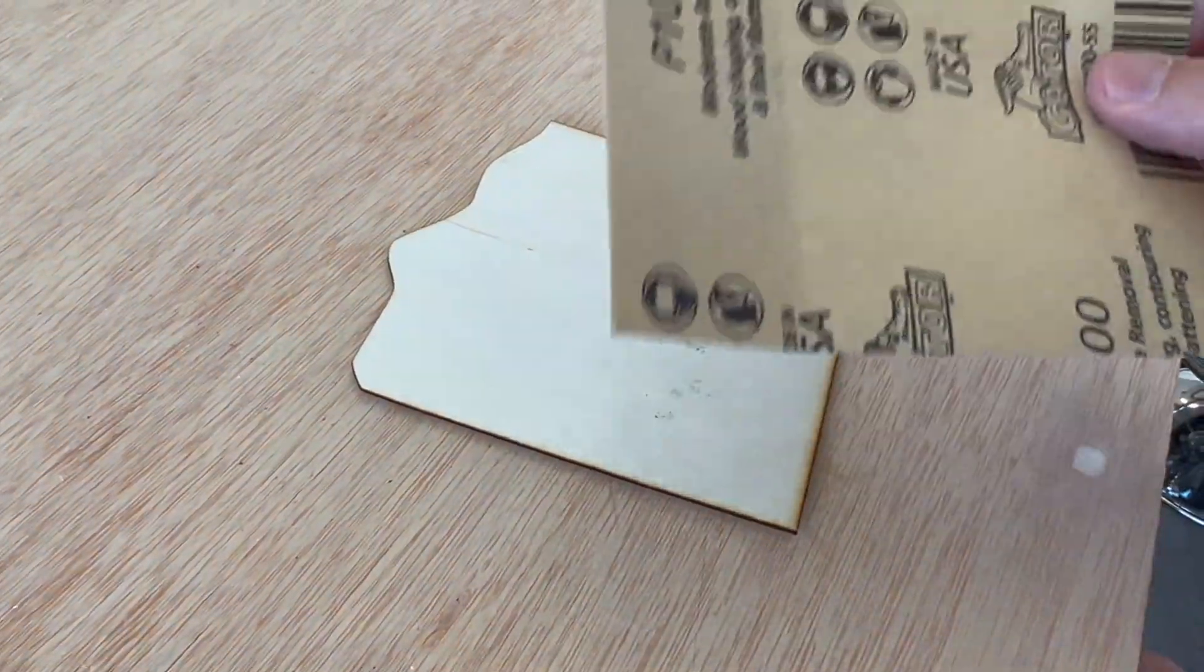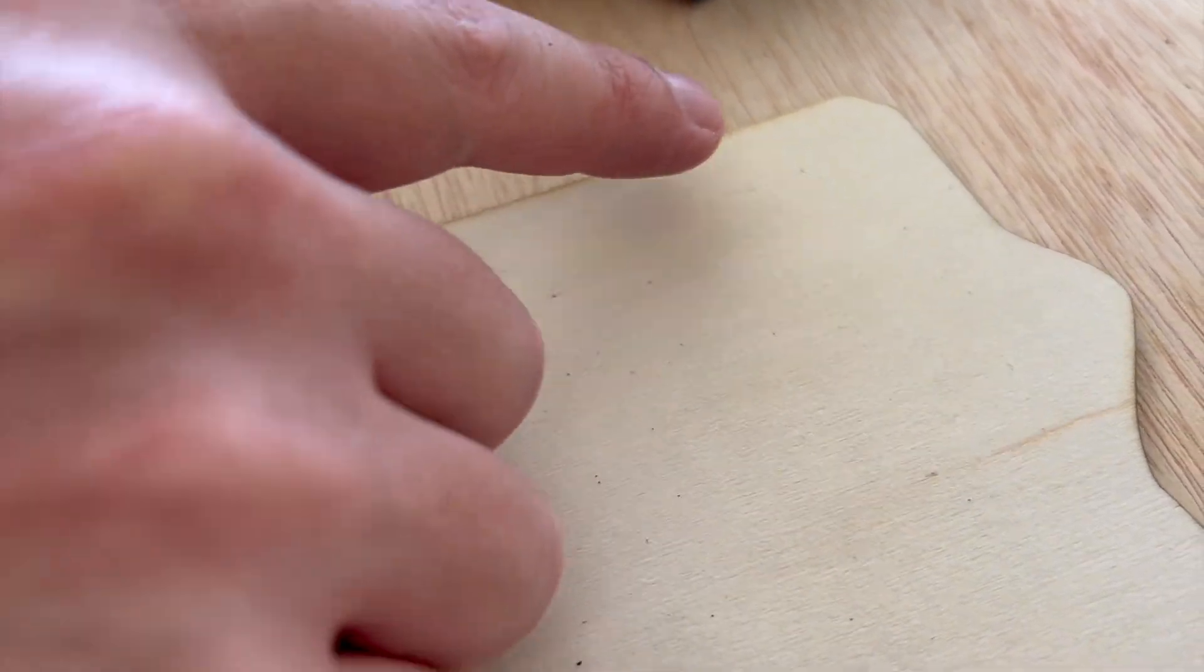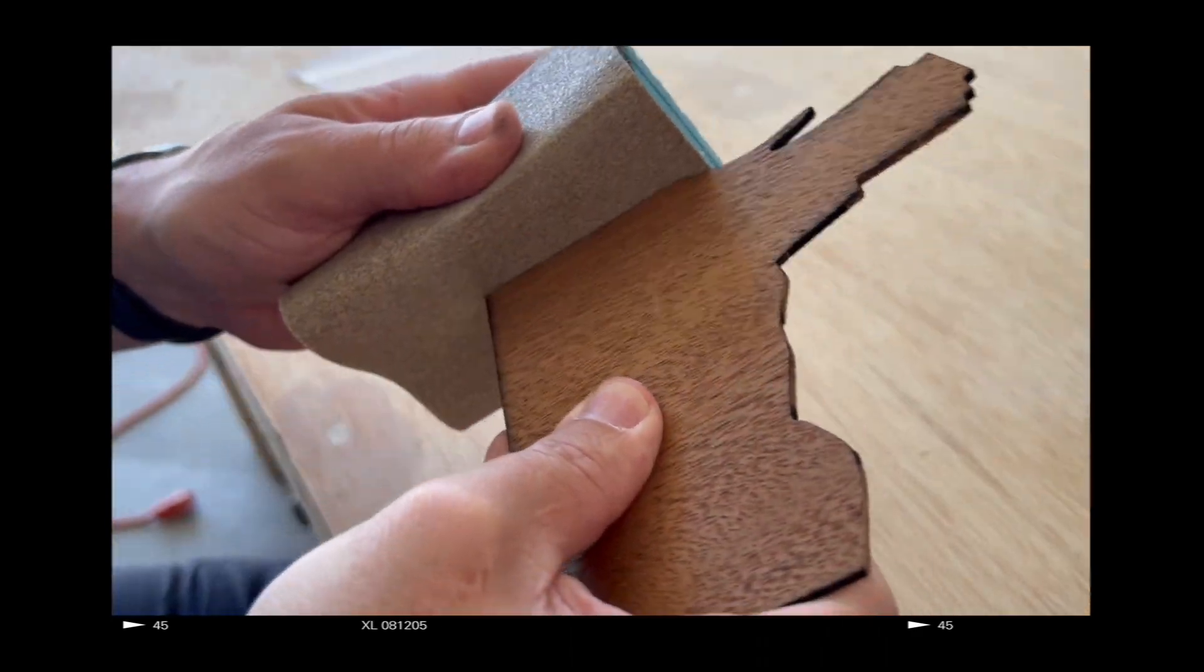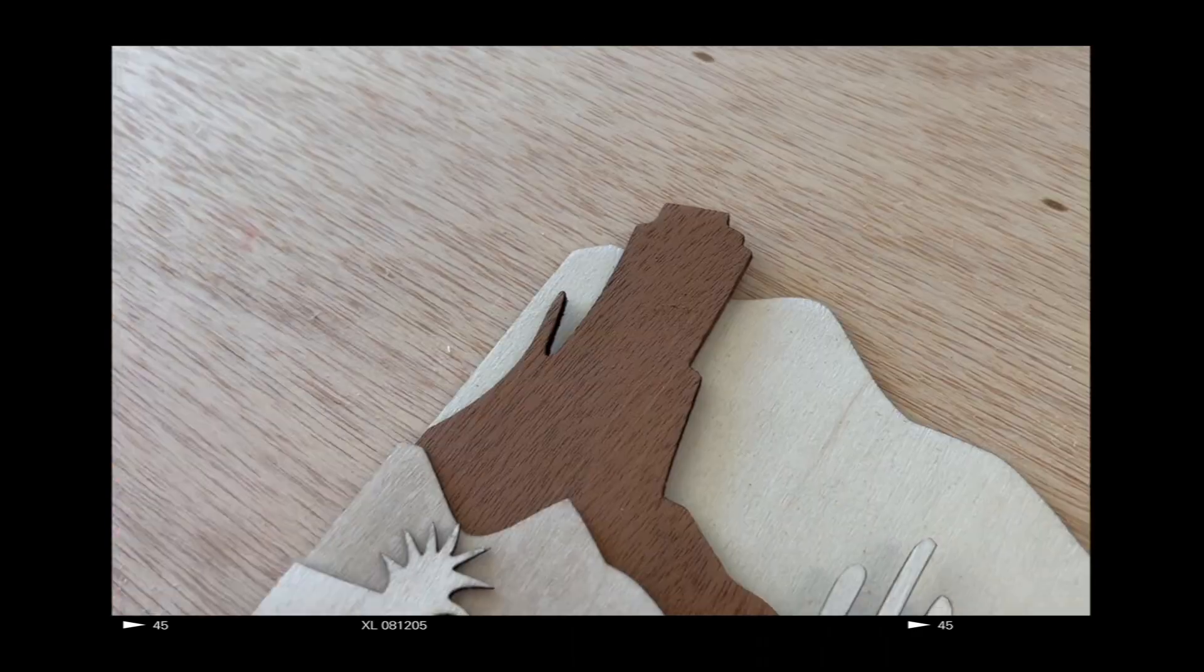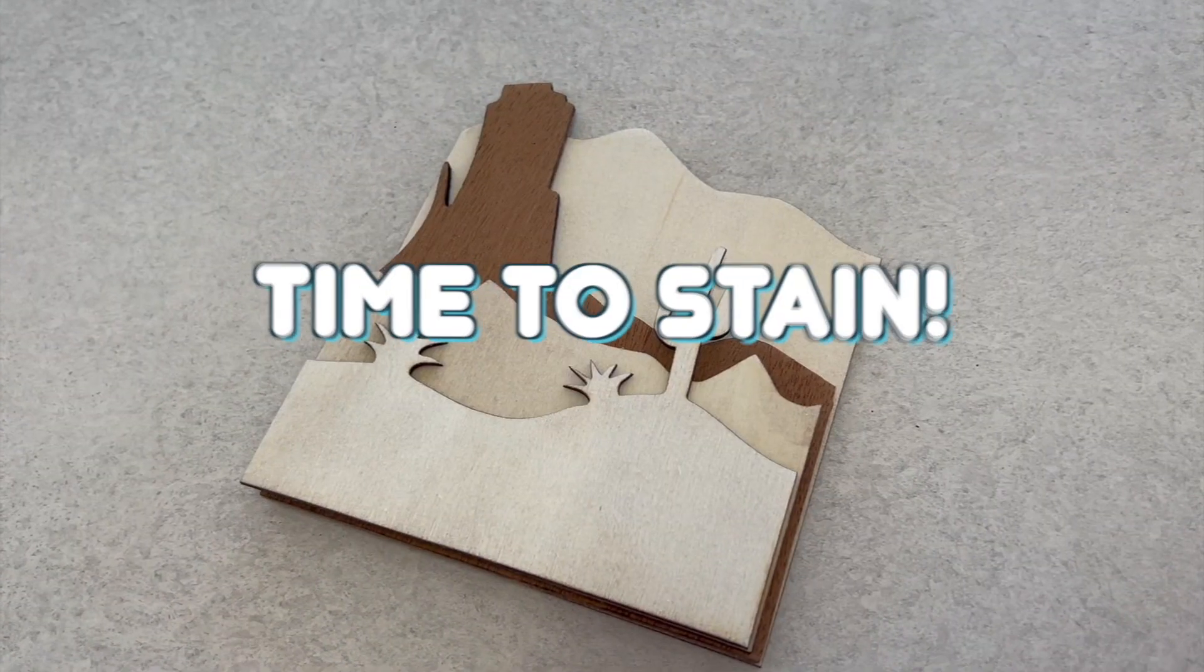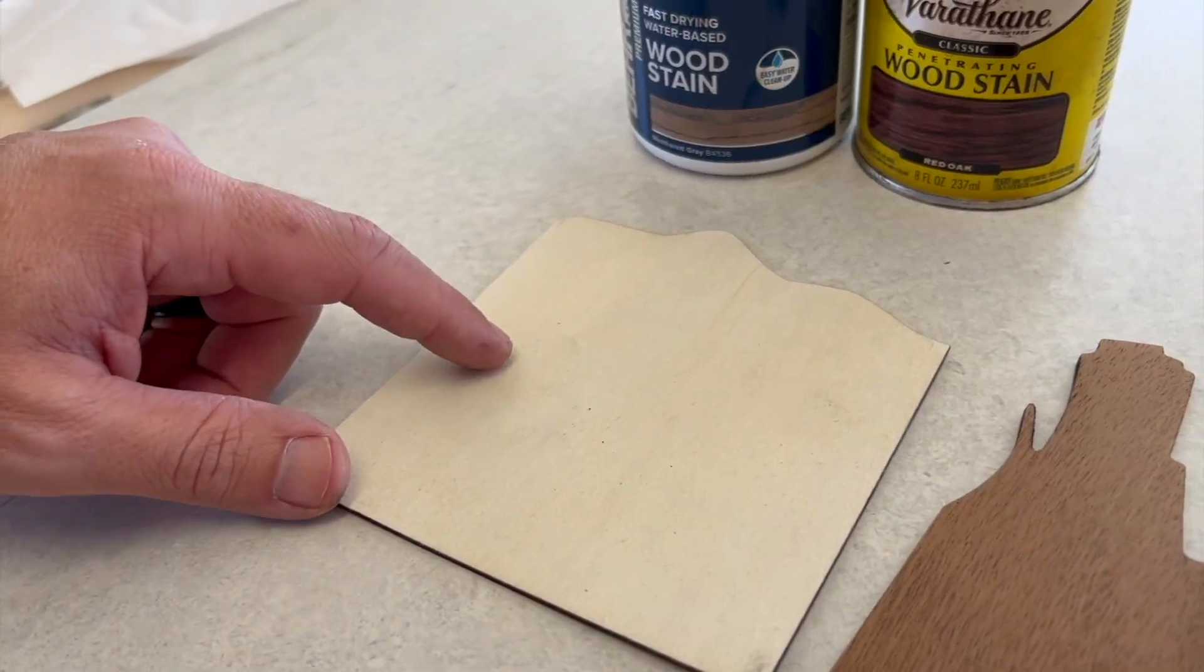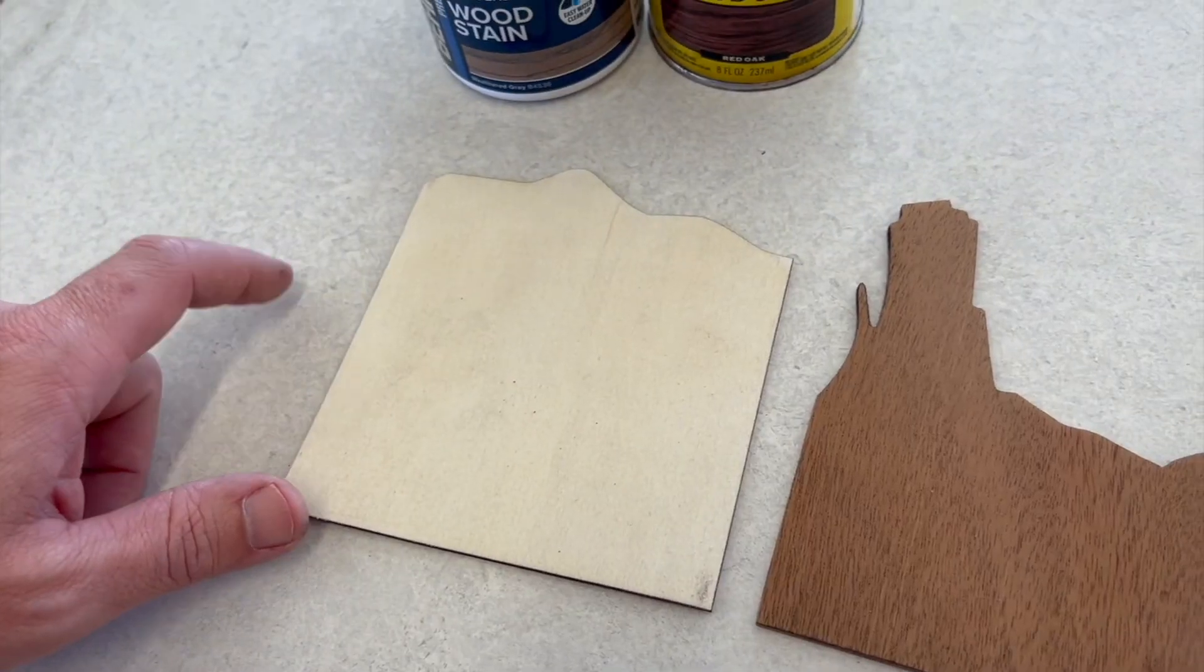Now I'm just going to lightly sand all these with 100 grit sandpaper. What this does, it will prep it for the stain as well as clean off all of the burn marks. Time to stain! We've got this gray water-based one for this, but it actually looks really good when you coat it with like red oak after, so we'll show you what that looks like.